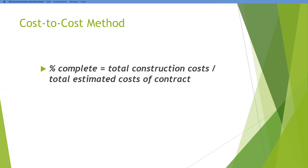I want you guys to maybe write down this formula or take a picture of this. This is the basic formula we're going to be talking about — how to figure our percentage of completion on a job. And that is: percent complete equals total actual construction costs divided by total estimated costs.